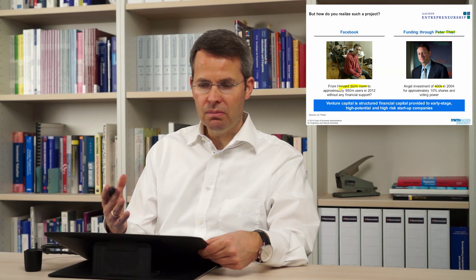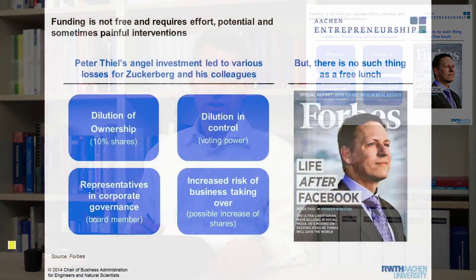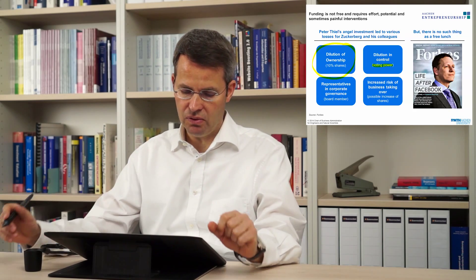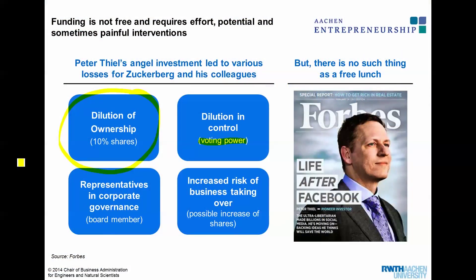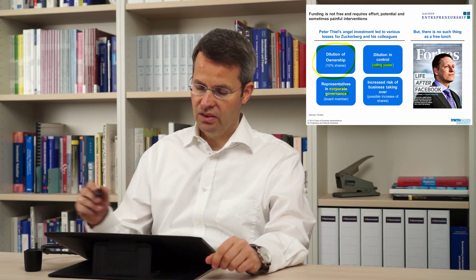However, it is not all about money. It is also about voting rights, for example. So what you do in that case is you dilute your ownership — meaning you give away 10% of the shares but also at least some voting power. You give away some control. So Mark Zuckerberg, after Peter Thiel came into Facebook, only owned 90% of the company, not 100%. However, it always makes sense if the 90% in the end is much bigger than 100% before.